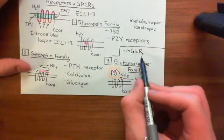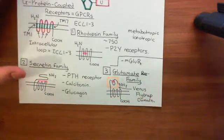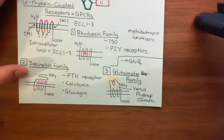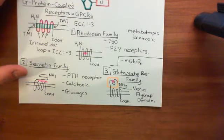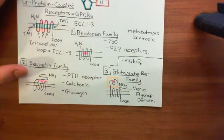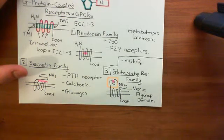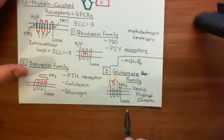The metabotropic glutamate receptors are not the most famous glutamate receptors — the ionotropic ones are more famous. Glutamate is the main excitatory neurotransmitter in the brain, and the main receptor types are ionotropic: AMPA receptors, kainate receptors, and NMDA receptors. However, there are also G-protein coupled receptors for glutamate — the metabotropic glutamate receptors — and there are eight of these, mGluR1 through mGluR8, all within the glutamate family.